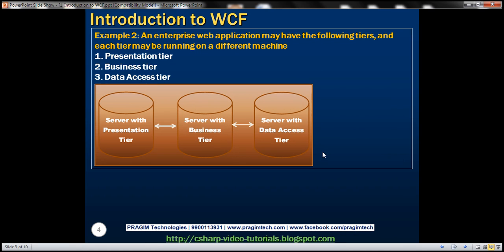Let's look at another example of a connected system. We may have an enterprise web application with three tiers — presentation, business, and data access — and each of these tiers may be running on a different machine.